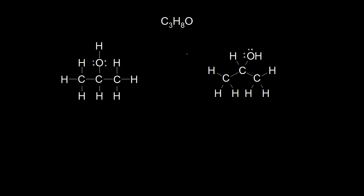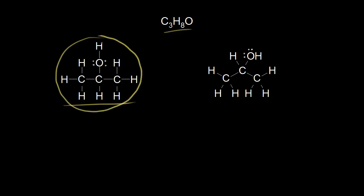In the previous video, we started with the molecular formula C3H8O, and we looked at one of the possible Lewis dot structures that you can draw with that molecular formula. From this Lewis dot structure, we looked at other ways to represent the same molecule. However, we didn't have time to talk about bond line structures, so let's start this video by taking this Lewis dot structure and turning it into a bond line structure.